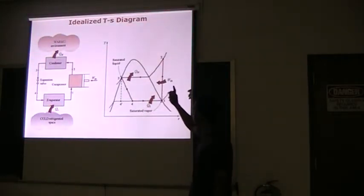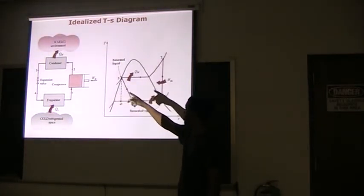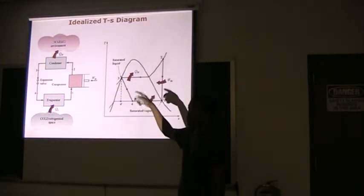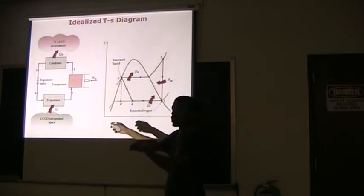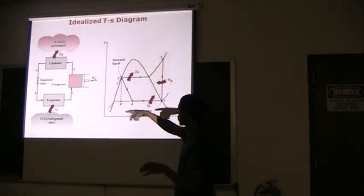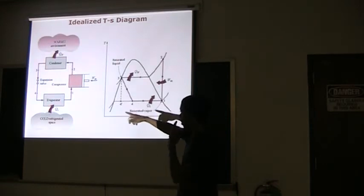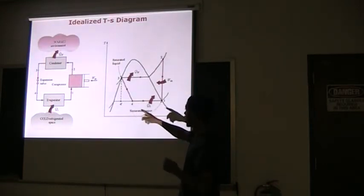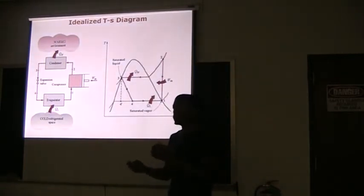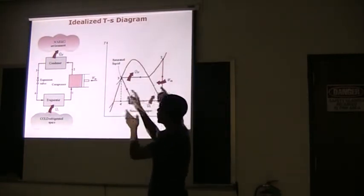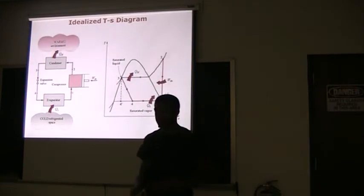You have from two to three over your condenser, you have your heat out, which is normally you want the heat going into the environment. And you have from three to four your expansion, you have from four to one your Q in, and that's you pulling heat from the inside of the room, and that's later released to the outside environment.